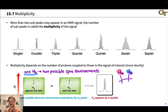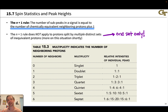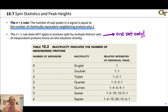What all three examples show us is that the number of possible spin environments and subpeaks is one more than the number of neighboring protons — for example, two neighbors give three subpeaks. This leads to the N+1 rule: the number of subpeaks in a signal equals the number of chemically equivalent neighboring protons plus one. One neighbor → doublet; two neighbors → triplet; three neighbors → quartet. However, the N+1 rule only works when there is one and only one set of equivalent neighboring protons.